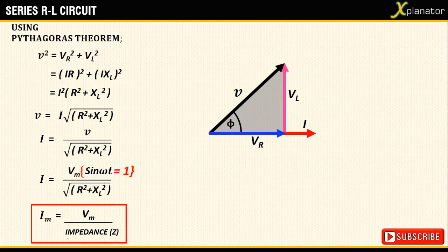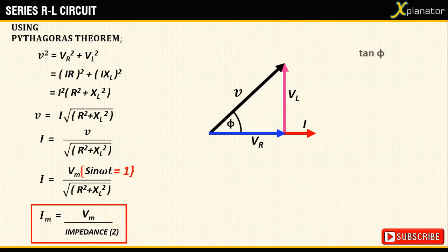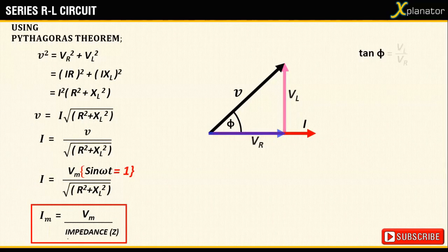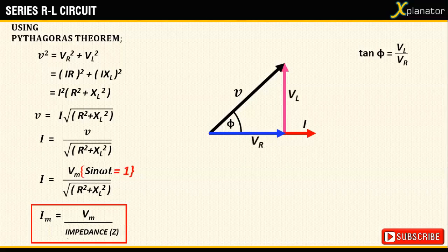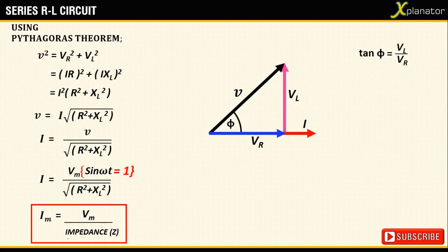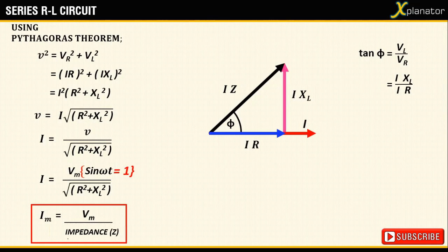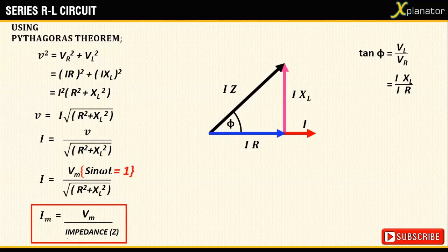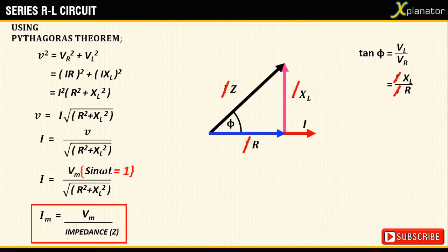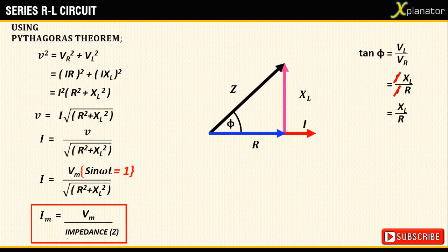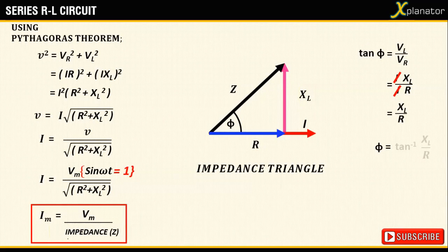To compute the value for phi, consider the triangle again and if you calculate tan phi, it will equate to Vl upon Vr. Substituting Vr and Vl as IR and Ixl, the relation will simplify to xl upon R. Hence, the phase angle phi is given as tan inverse of (xl upon R).